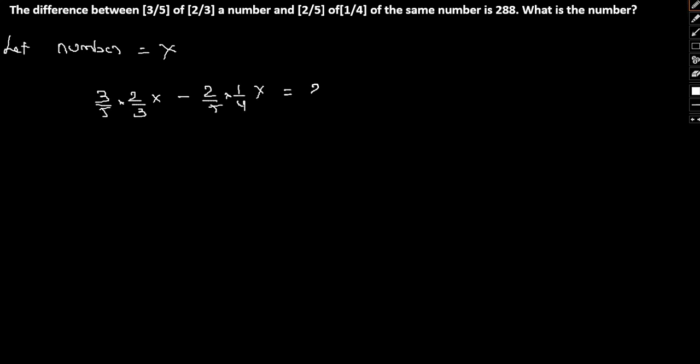So it's nothing but 6/15 x minus 2/20 x equal to 288. If we take the LCM, it comes out to be 24x - 6x, that is 18x by 60 equal to 288.